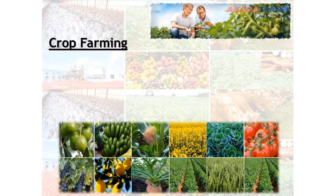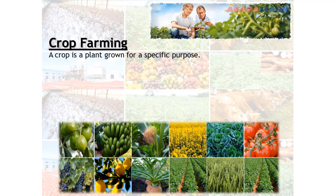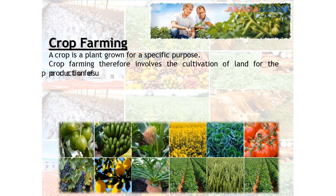The first form is crop farming. A crop is a plant grown for a specific purpose. Crop farming therefore involves the cultivation of land for the production of useful crops for the benefit of man.